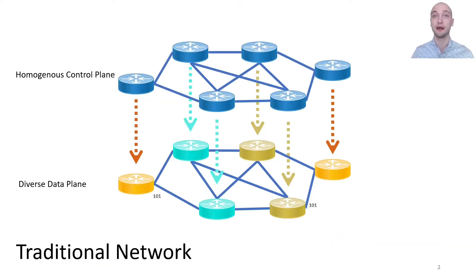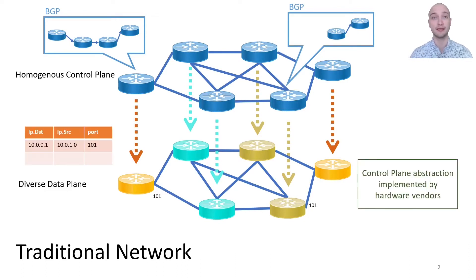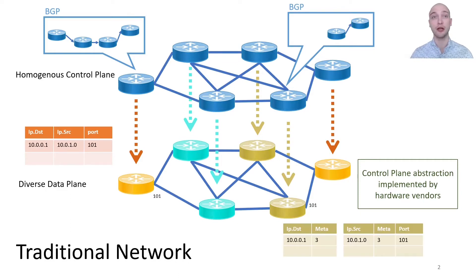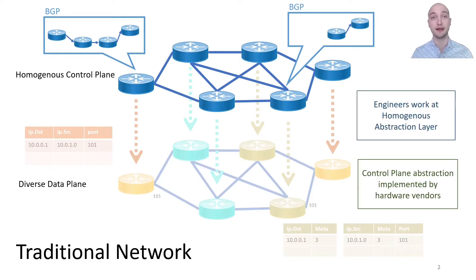In a traditional network, a control plane runs a unified protocol that computes high-level networking objectives such as BGP routes. Then, vendor-provided abstraction code translates the routes into forwarding table entries in a data plane — for example, the one-stage pipeline in orange or the two-stage pipeline in beige, both of which implement the same forwarding rule. In this architecture, engineers are oblivious to the pipeline structure on individual routers; that is, the homogeneous control plane effectively abstracts over the diversity of pipelines in the data plane.